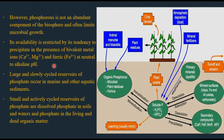Phosphorus availability is restricted by its tendency to precipitate in the presence of bivalent metal ions like calcium, magnesium, and ferric ions at neutral to alkaline pH. Large and slowly cycling reservoirs of phosphate occur mainly in marine and aquatic sediments. In contrast, soil has small but actively cycling reservoirs of phosphate, including dissolved phosphates in soils and waters, and phosphate in living and dead organic matter.